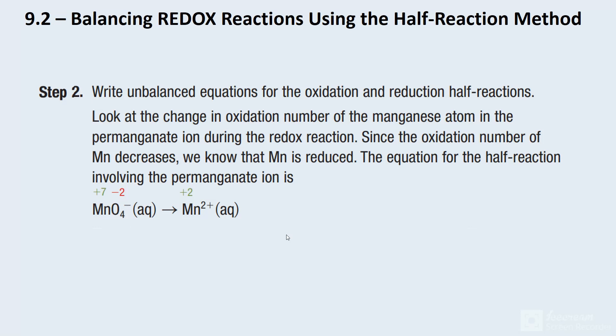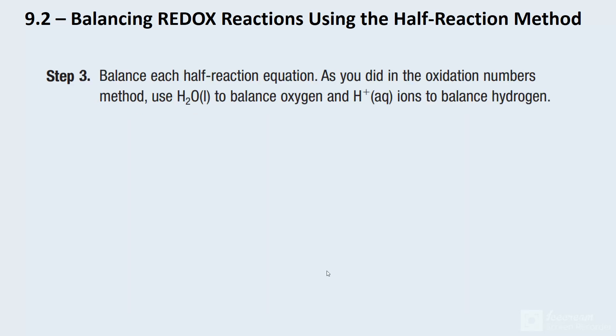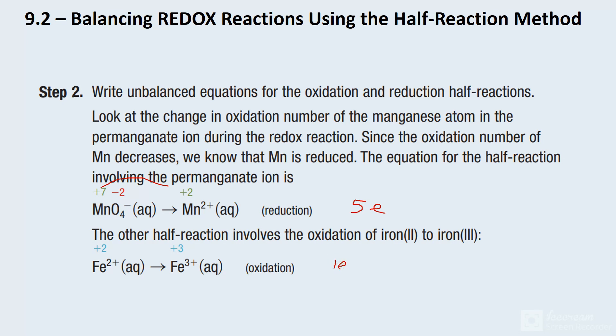So first thing we can say is that our manganese has been reduced. And we've probably got a difference of what, five electrons there. So that's going to come into play in a little bit. And then with our other one that was pretty straightforward, we have an oxidation. And there should be a difference of one electron there, one electron. So that five and a one is what's going to come into play here in a little bit.